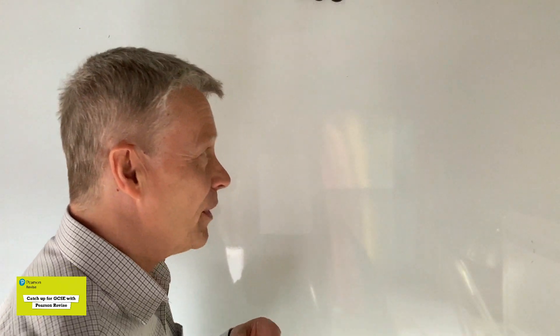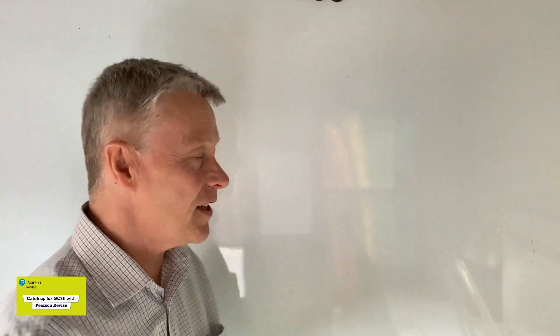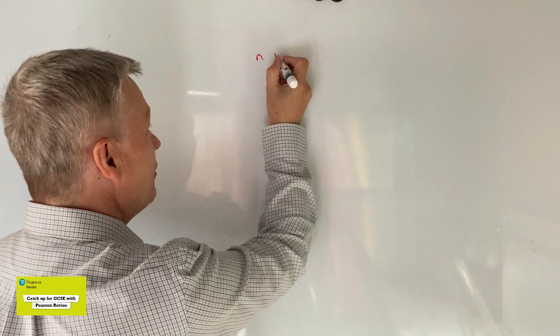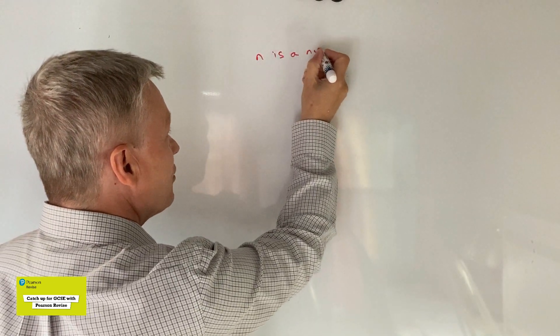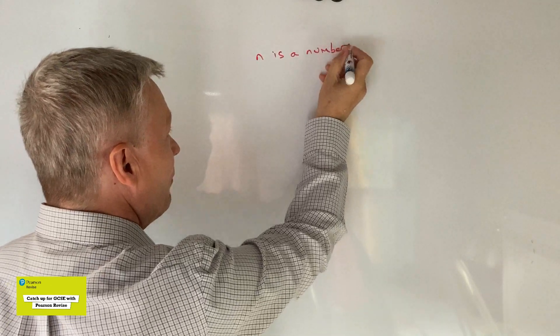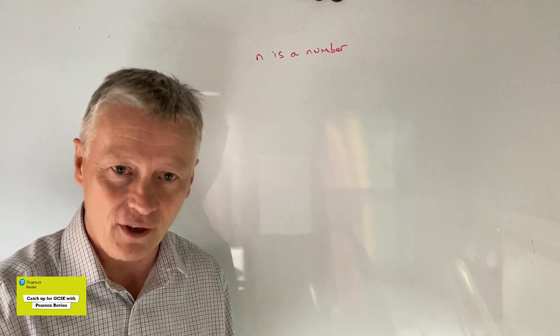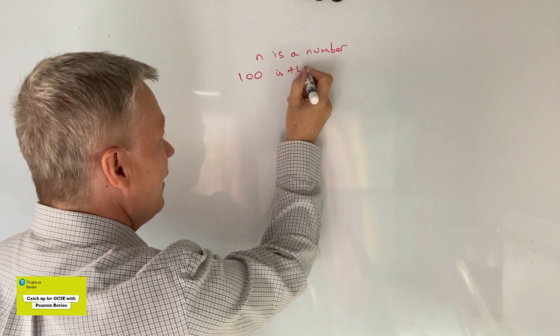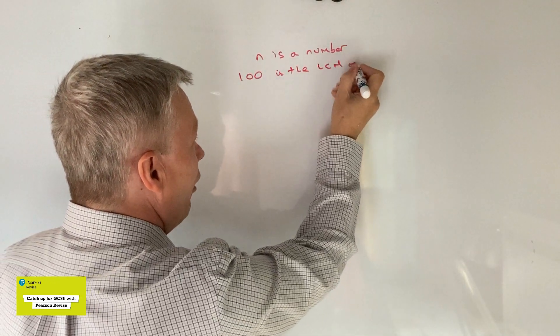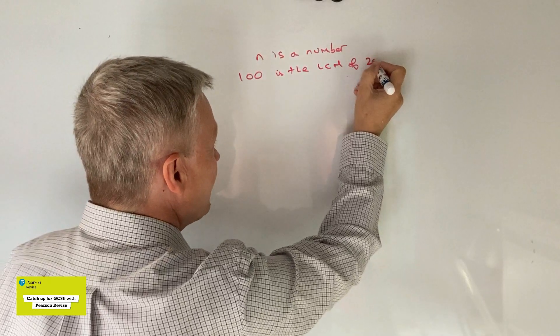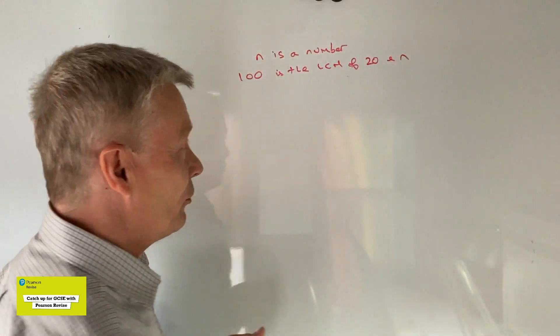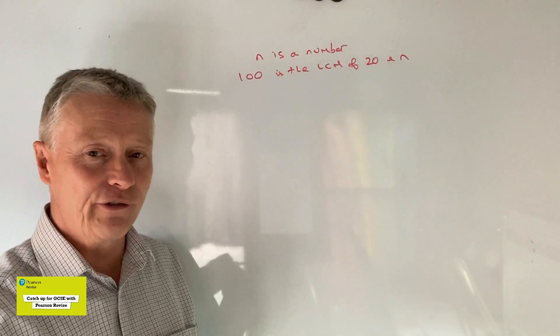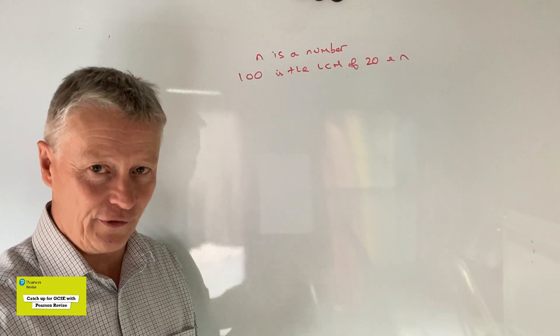So question number two is a bit of a wordy question. What it says is that N is a number. So that's one of the things we know about N. N is a number. Also, 100 is the LCM of 20 and N. And what we're being asked to do is to find two values for N.